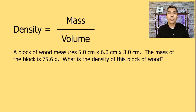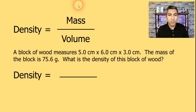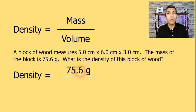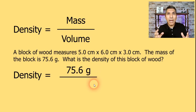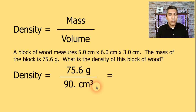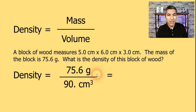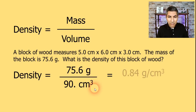Once again, we're going to use the equation: density equals mass divided by volume. The mass is 75.6 grams, so I'll place that in the numerator. The volume is found by taking length times width times height — so we multiply 5.0 cm × 6.0 cm × 3.0 cm, and we find that the volume of this rectangularly shaped object is 90 cubic centimeters. To find the density, we take 75.6 grams divided by 90 cubic centimeters, and the answer is 0.84 grams per cubic centimeter.